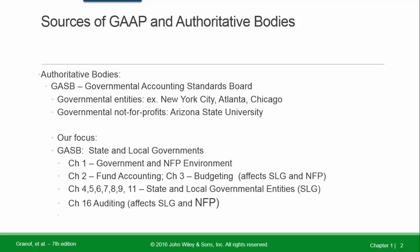Chapter 1 looks at the governmental and not-for-profit environment. Chapter 2 covers Fund Accounting. Chapter 3 covers Budgeting. Chapters 4 through 9 and Chapter 11 address State and Local Government Entities. And Chapter 16 covers Auditing.